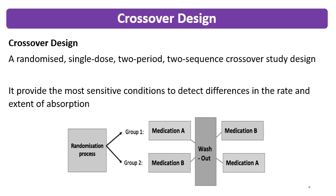Crossover design is the most preferred design for generic formulations and for innovator formulations for bioequivalence. Innovator products may require bioequivalence when their formulation needs a change in composition, process, site, or batch size. Crossover design is a randomized, single dose, two-period, two-sequence crossover study design. For example, if you take 100 subjects, you divide them into two groups of 50 — group A and group B. Group A receives the test formulation and group B receives the reference formulation.